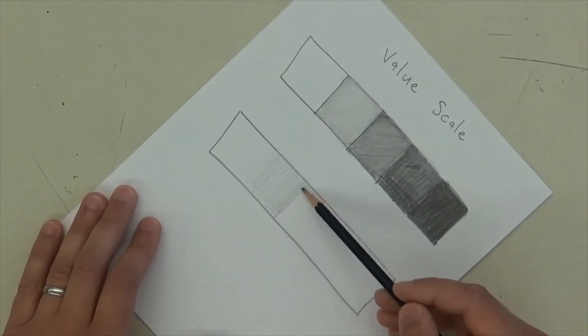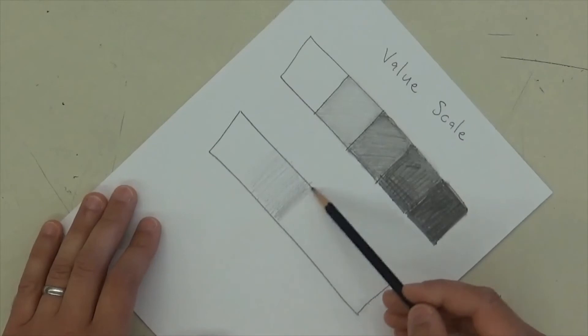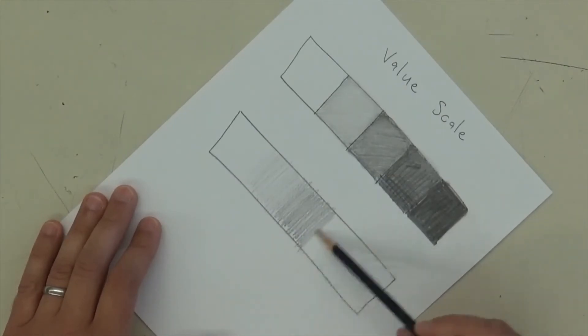And then as I go, I'm going to push down a little bit harder each time. And I know that when I get to the middle, I'm going to want to be pushing down kind of medium so it matches the top. The difference with the bottom value scale is that there's not individual jumps. It fades. It's gradual. So this is also called a gradation. I'm going from one thing to another, but I'm fading it as I go.